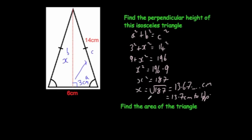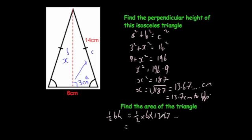The question then asks us to find the area of the triangle. The area of a triangle is equal to half base times height. The base is 6, so it's half times 6 times the height. It's better to use the more accurate version from the calculator display, so we use 13.67 and so on rather than the rounded 13.7. Half of 6 is 3, times 13.67 gives an area of 41.02 centimetres squared to two decimal places. Whenever you use your answer to do something else, try to use it as accurately as possible.